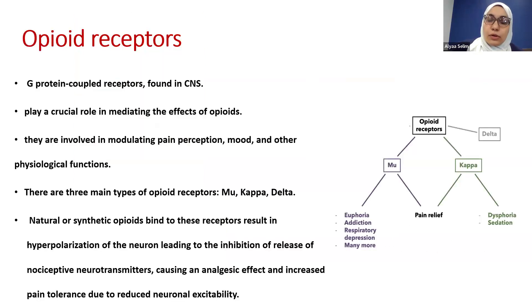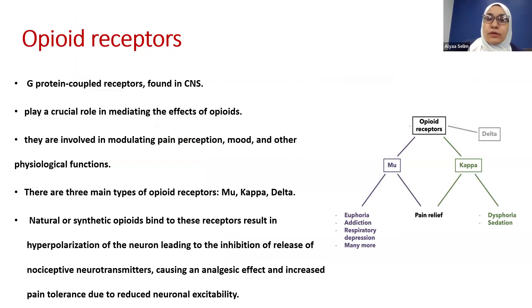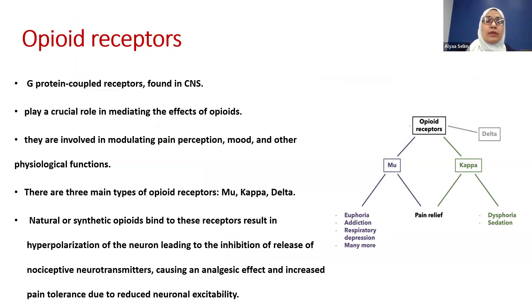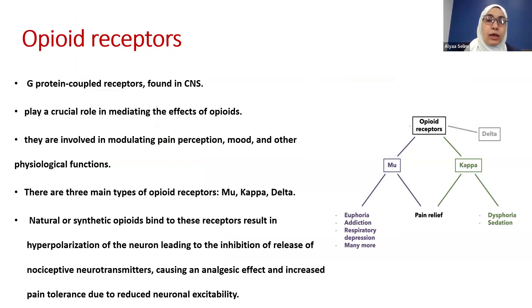When we talk about morphine, we say it is an agonist of opioid receptors. Opioid receptors are G-protein coupled receptors found mainly in the central nervous system. They play a crucial role in mediating the effect of opioids, involving modulation of the brain's perception, mood, and other physiological effects. There are three main types: mu, kappa, and delta.